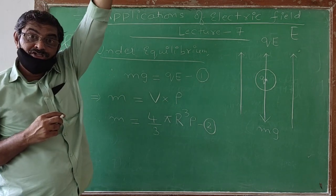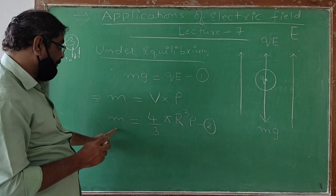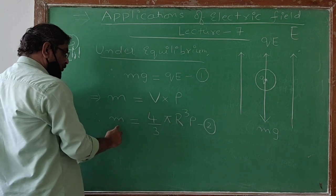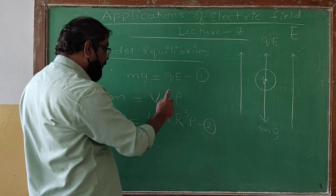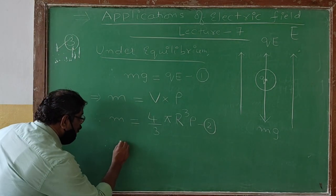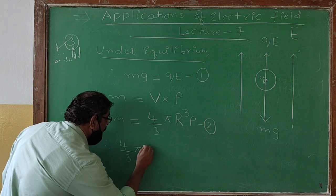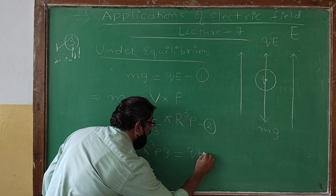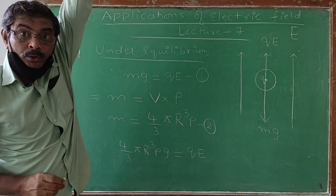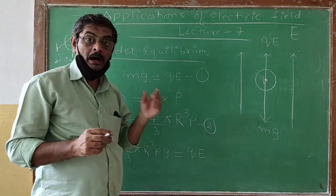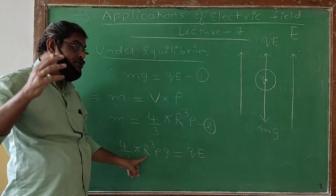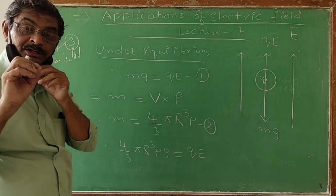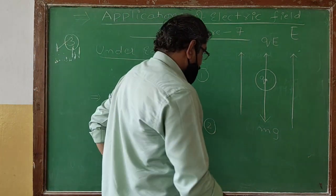Substituting the value of mass M into equation 1, wherever we have mass M we replace it with (4/3)πr³ρ. So the equation becomes: (4/3)πr³ρg = QE. From this equation we can find the radius of the given oil droplet.